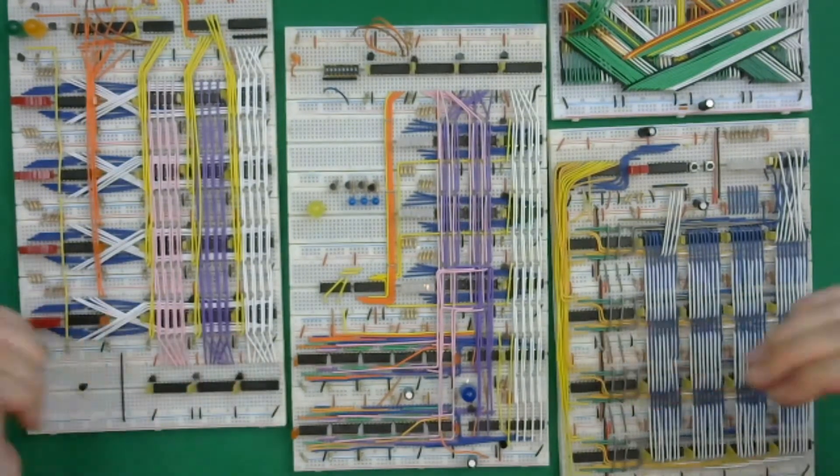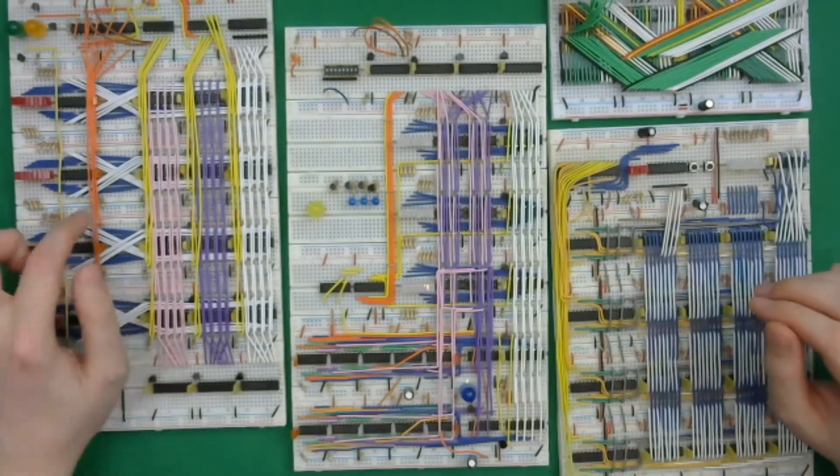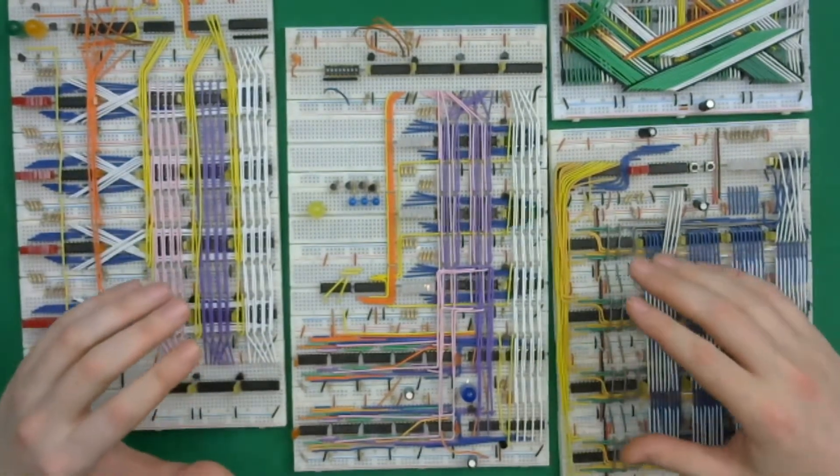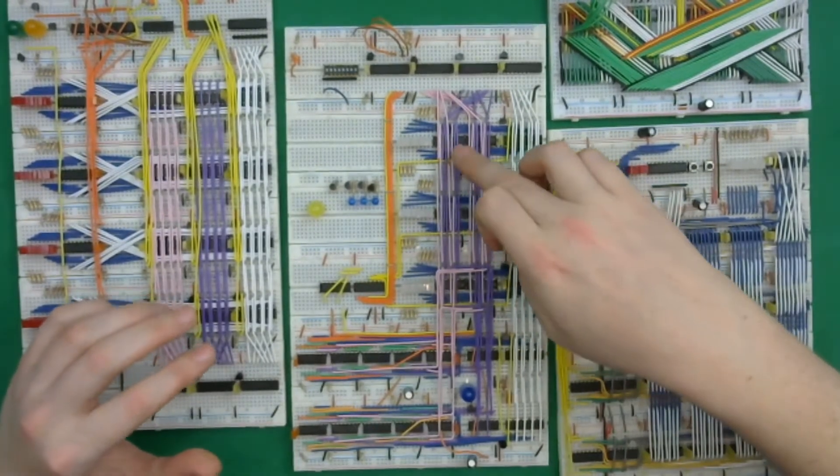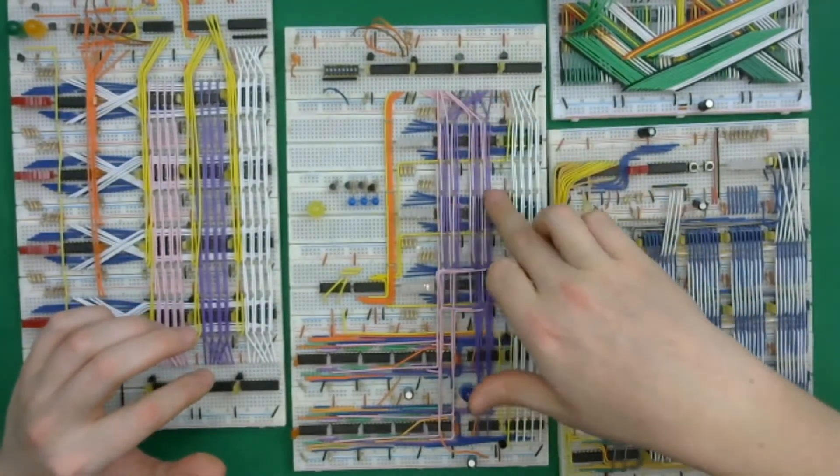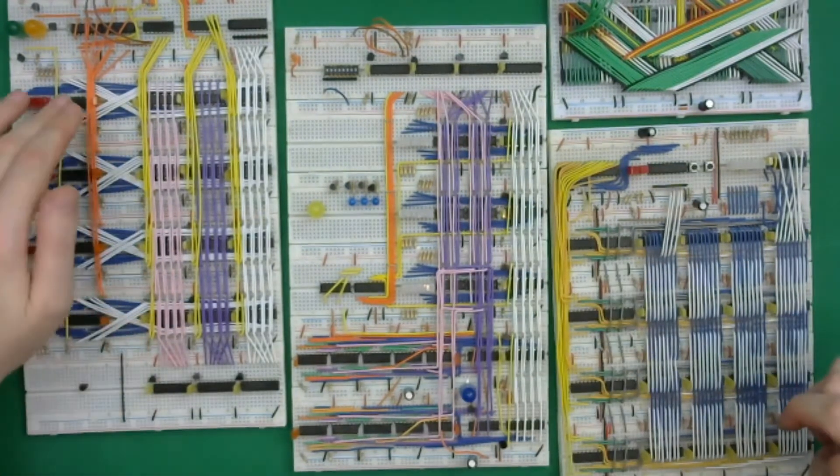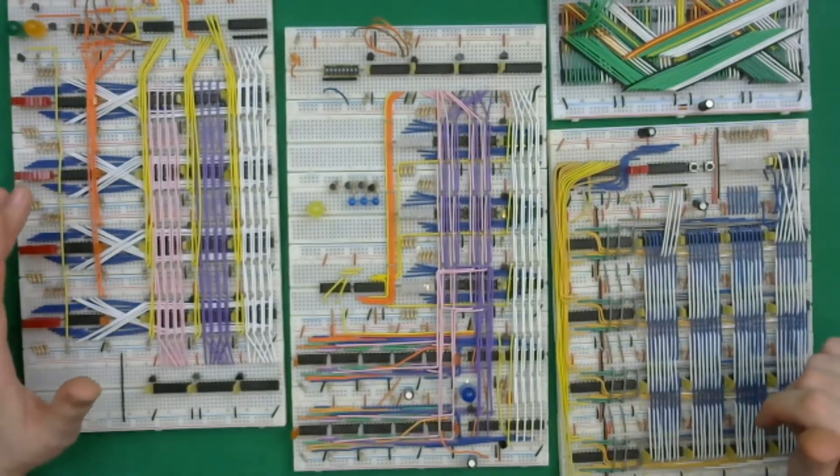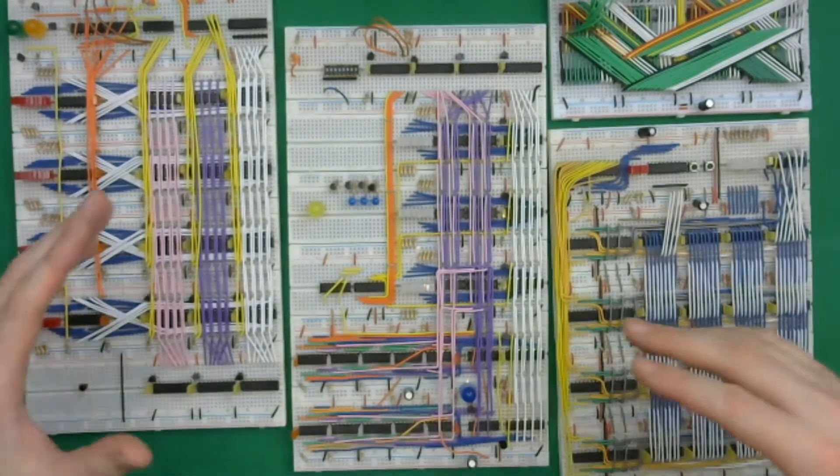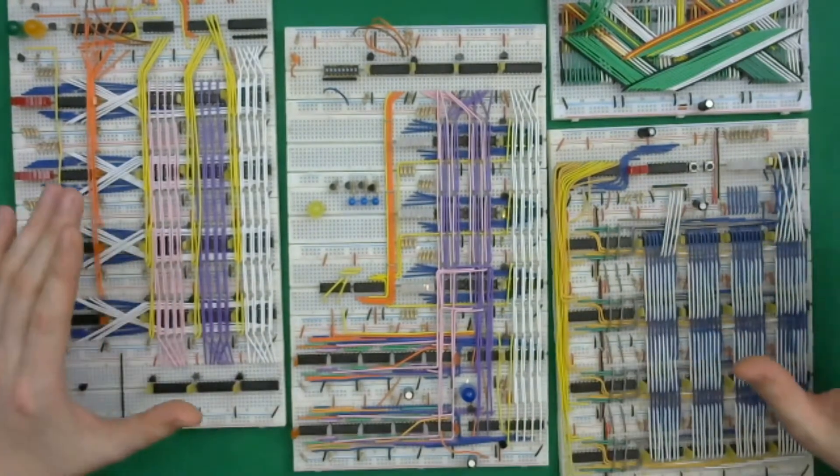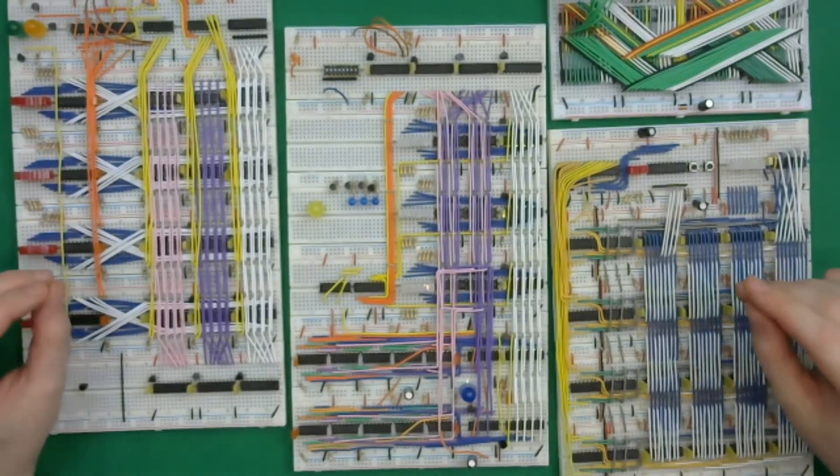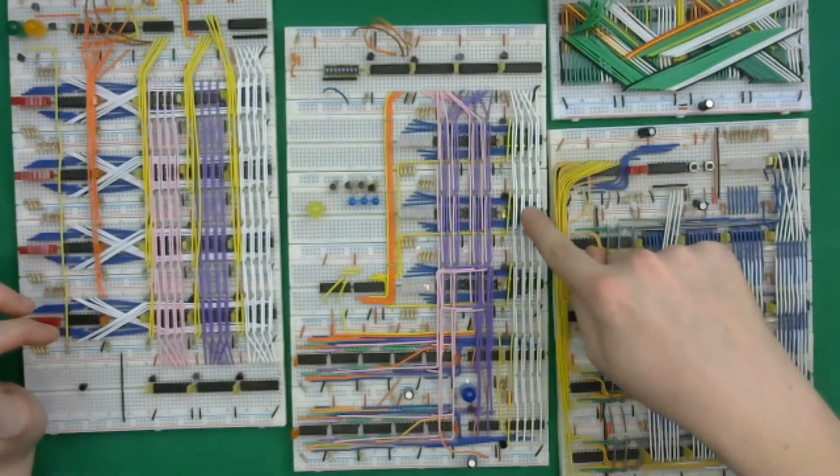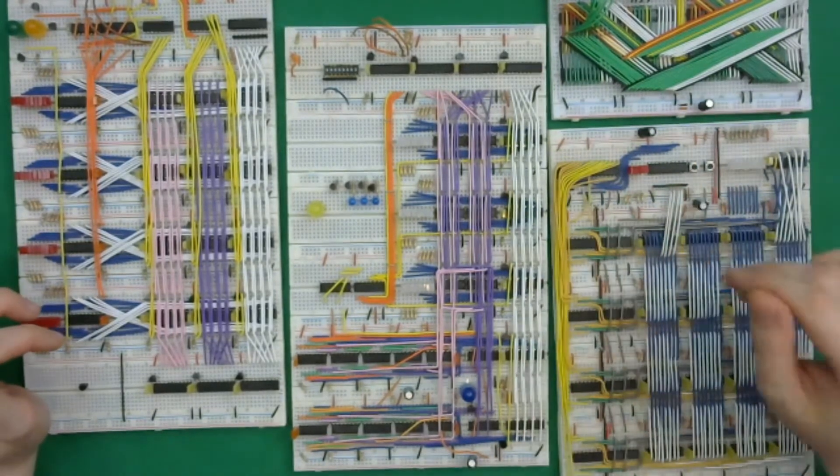Moving into the breadboards, we have the unbuffered data bus, which is blue. So every chip essentially is always outputting its current state. We're always getting the output of XOR these two operands or OR these two operands and things like that. Every one of these register chips is always outputting the data that's stored.